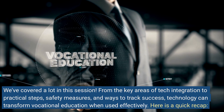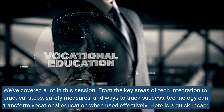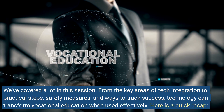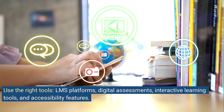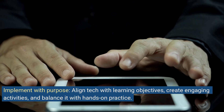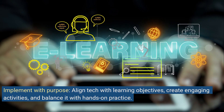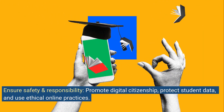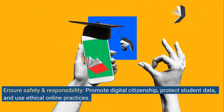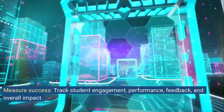We've covered a lot in this session — from the key areas of tech integration to practical steps, safety measures, and ways to track success. Technology can transform vocational education when used effectively. Here is a quick recap: use the right tools — LMS platforms, digital assessments, interactive learning tools, and accessibility features. Implement with purpose — align tech with learning objectives, create engaging activities, and balance it with hands-on practice. Ensure safety and responsibility — promote digital citizenship, protect student data, and use ethical online practices. Measure success — track student engagement, performance, feedback, and overall impact.